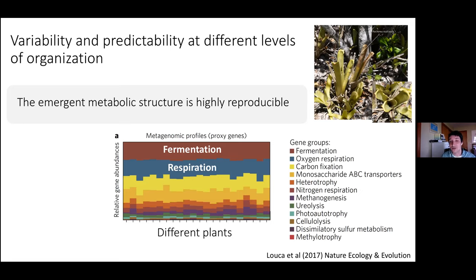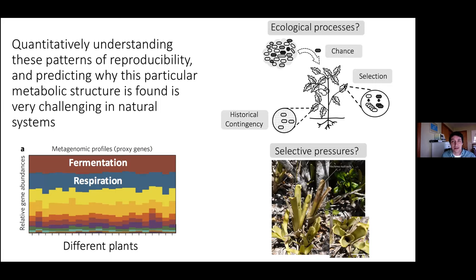Yet when they looked at the metagenome and examined the abundance of different genes involved in metabolic pathways, they found that the fraction of the metagenome devoted to fermentation, respiration, carbon fixation, and nitrogen respiration were very, very consistent from plant to plant. They found very similar quantitative ratios of these metabolic functions in all these habitats, despite substantial taxonomic variation. This same finding has been made in marine environments, the human microbiome, and other communities.